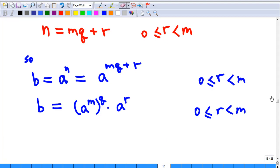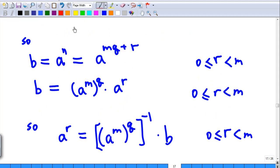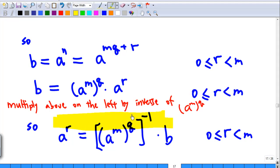Split the right-hand side and get b equals a power m raised to power q times a power r, where r is an integer greater than or equal to zero and less than m. I multiply both sides on the left by the inverse of a power m raised to power q. Then we find that a power r equals this expression.